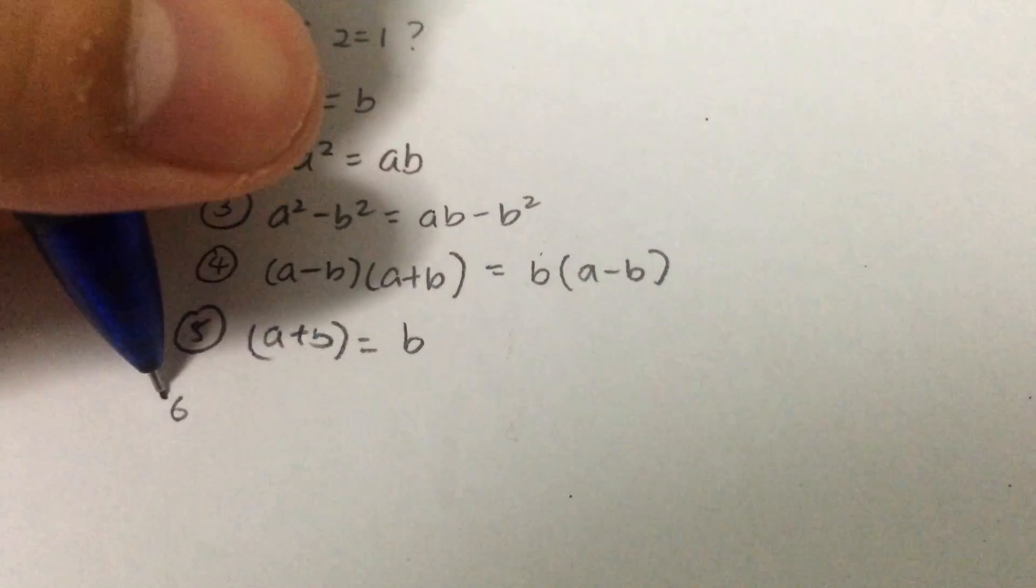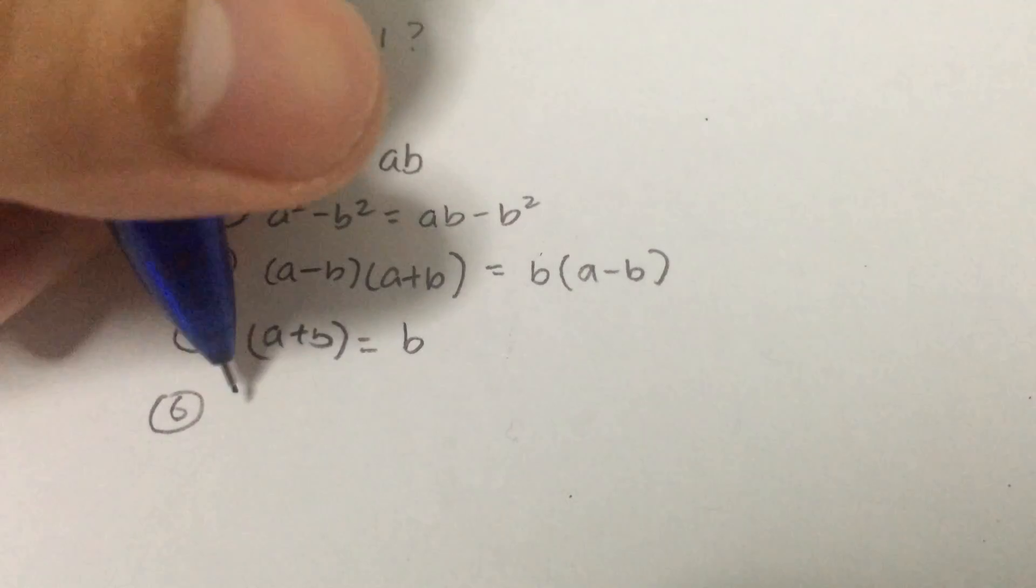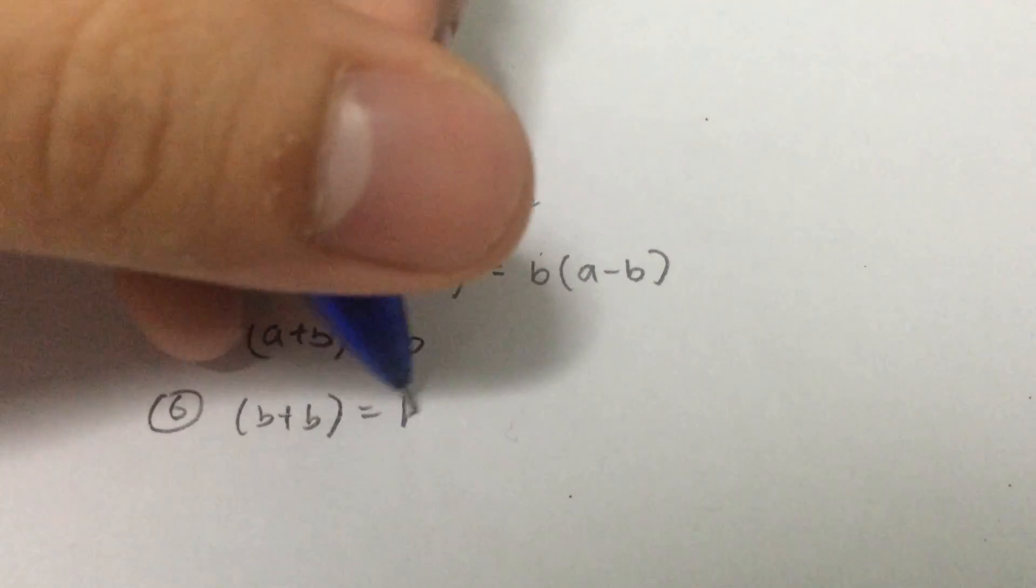Alright, and observing that a is equals to b, so I substitute a as b. So I'll get b plus b is equals to b.